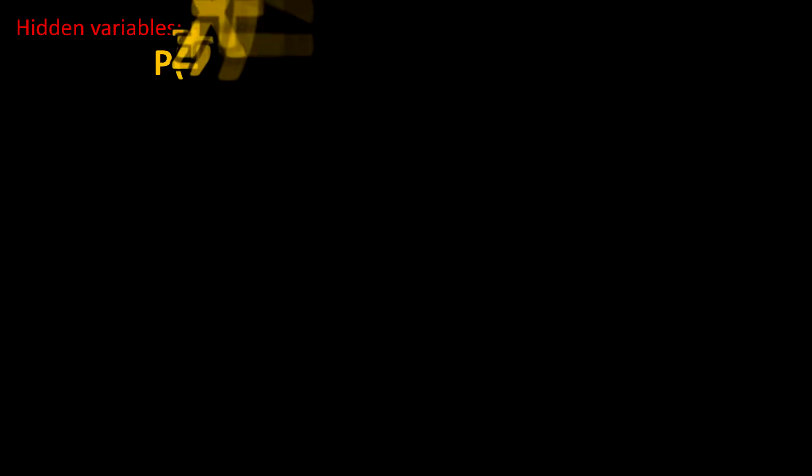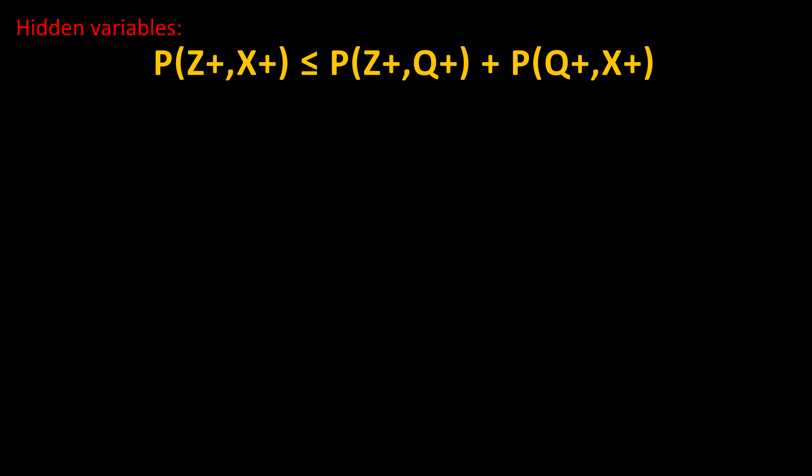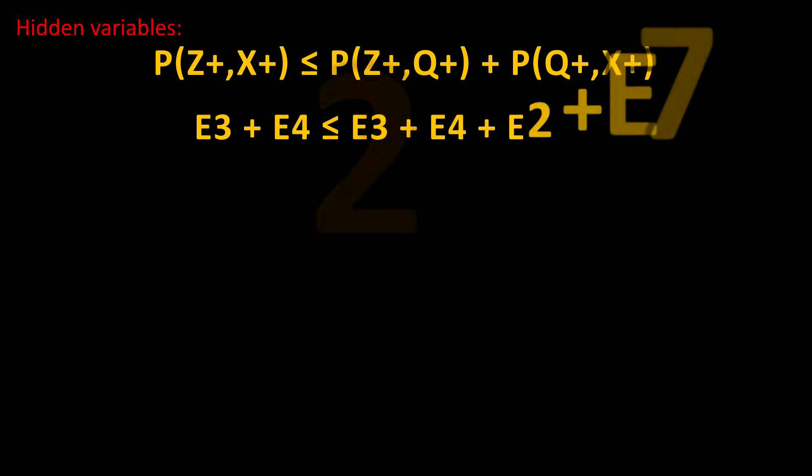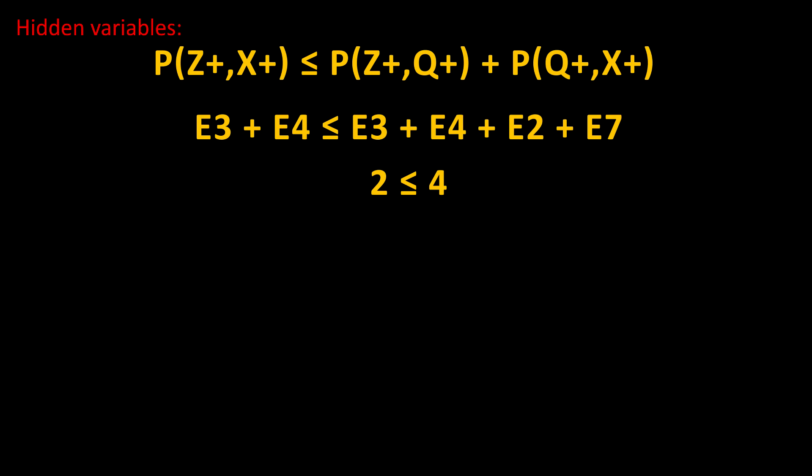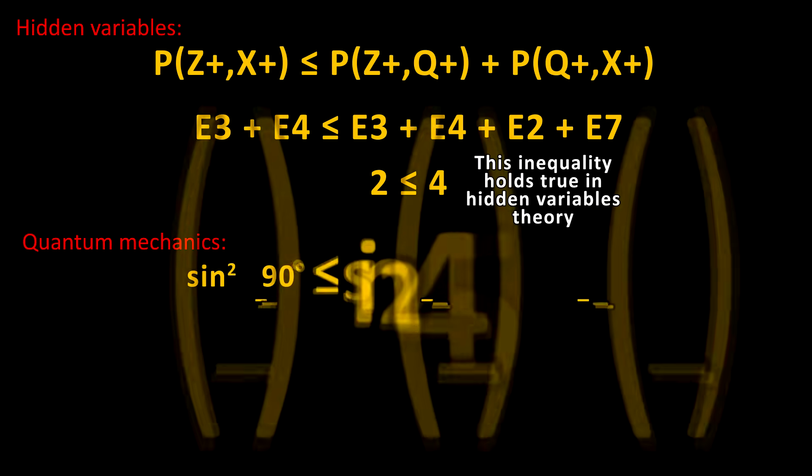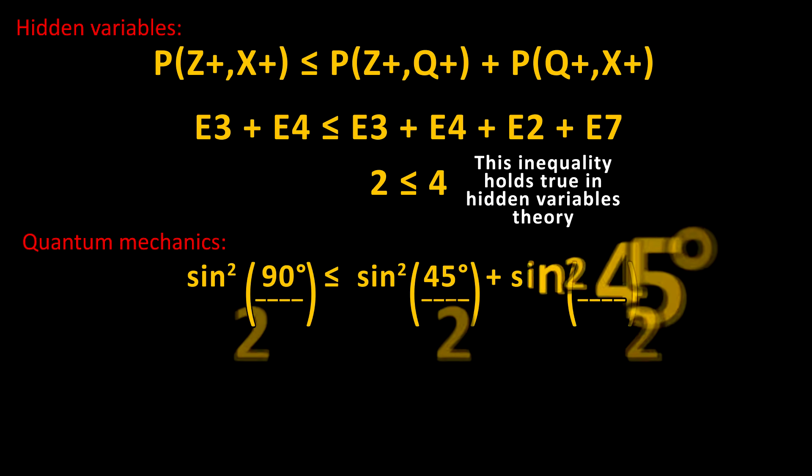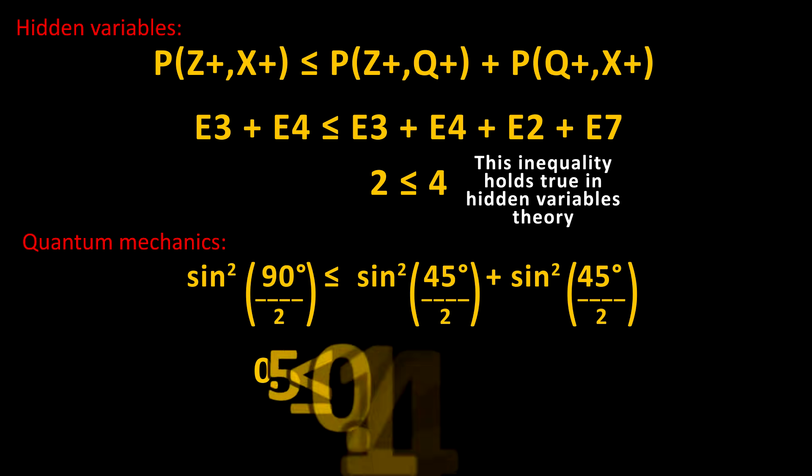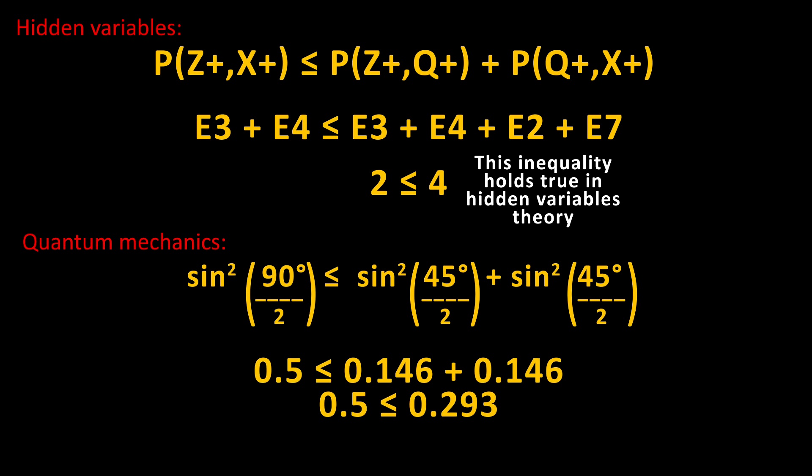So we can write out and compare Bell's inequality for both cases. For hidden variables, the equation would be E3 plus E4 is less than or equal to E3 plus E4 plus E2 plus E7. 2 is less than or equal to 4, the inequality holds true. For quantum mechanics, the equation would be sine squared of 90 degrees divided by 2 is less than or equal to the sine squared of 45 degrees divided by 2 plus the sine squared of 45 degrees divided by 2. And when you solve this, you get 0.5 is less than or equal to 0.293, which of course is not true. So Bell's inequality is violated in quantum mechanics, which is exactly what we observe in experiment after experiment.